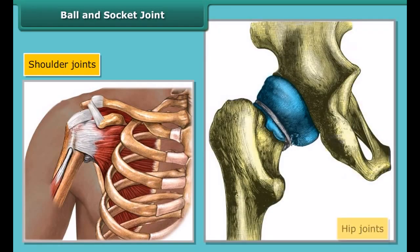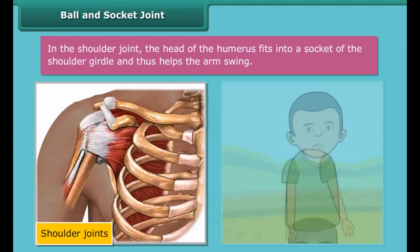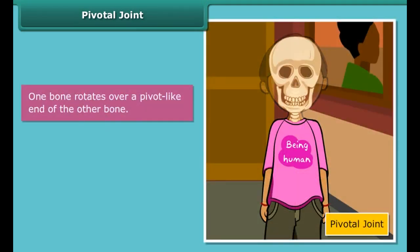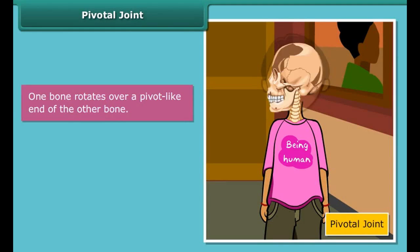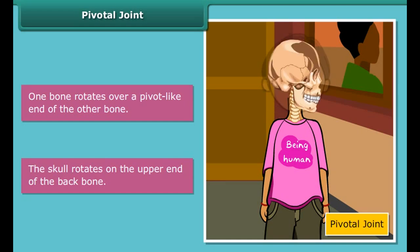Shoulder joints and hip joints are examples of ball and socket joints. In the shoulder joint, the head of the humerus fits into a socket of the shoulder girdle and helps in arm swing. In the hip joint, the large ball-like head of the femur fits into the deep socket of the hip girdle. In a pivotal joint, one bone rotates over a pivot-like end of the other bone, like the skull rotating on the upper end of the backbone.